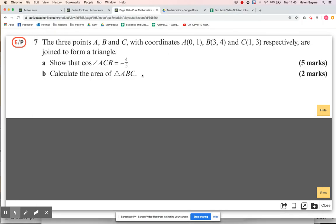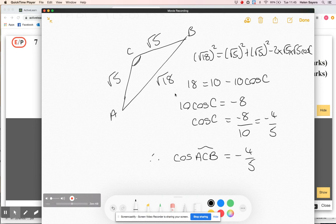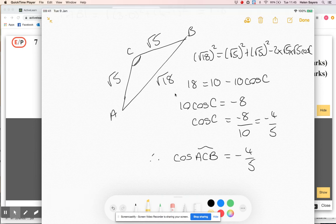Right, so that was five marks, so this bit should be a lot quicker. So then calculate the area. And bear in mind, you could have done this even if you got a bit stuck on part A, because if we know that, which we did, they told us in the question, I can just do inverse cos of minus four fifths and get the angle at C.